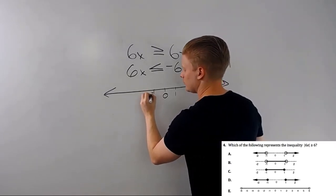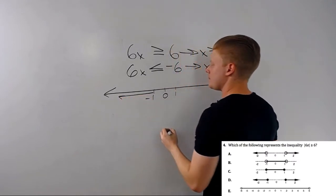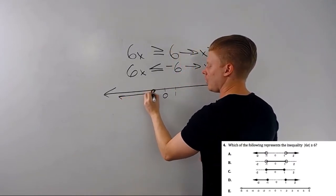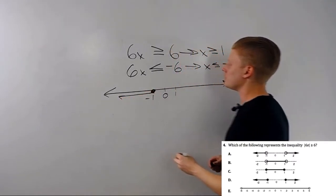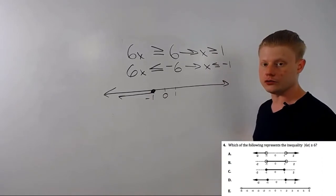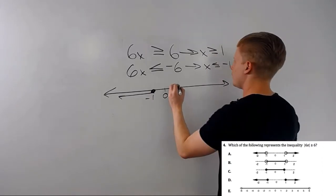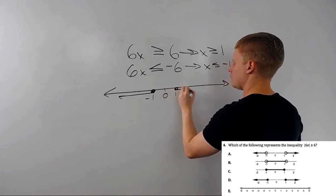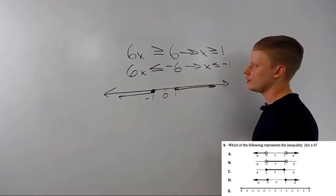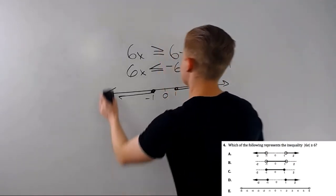x is less than or equal to negative 1. That is this, going this way. And the dot is going to be closed. Because it is less than or equal to, it includes that point. Over here, greater than 1.